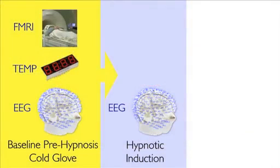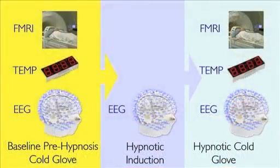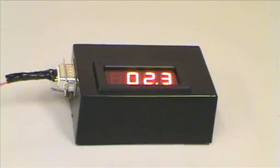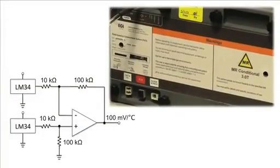Single-modality EEG data are then recorded during hypnotic induction. Simultaneous EEG fMRI cold glove data are recorded once again following hypnotic induction, and hand temperature measurements are recorded throughout the experiment using our MR-compatible differential thermometry device.